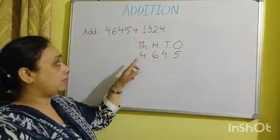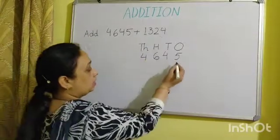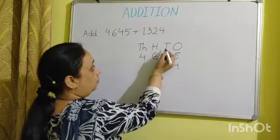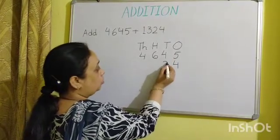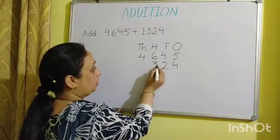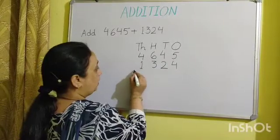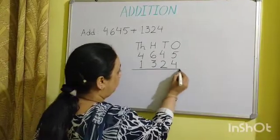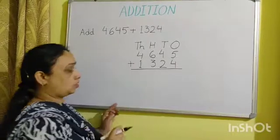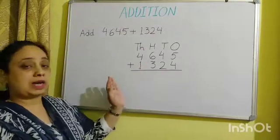Now the next number we will place below the first number. In the ones column we will place 4; for tens we are going to place 2; for hundreds we are going to place 3; and for thousands we are going to place 1. Now we are going to put the addition sign, which is also known as plus.